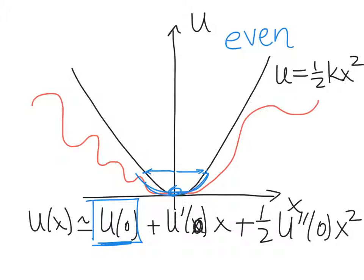The next term in the Taylor expansion is the first derivative of the potential energy function evaluated at x equals zero. So this is the first derivative, evaluated at x equals zero, times displacement from equilibrium.